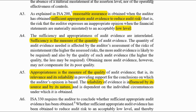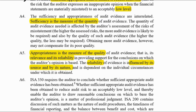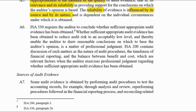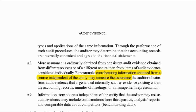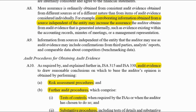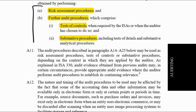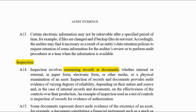A14 to A24 says we need to have sufficient and appropriate audit evidence to reduce audit risk. Sufficiency is a measure of quantity — do I have enough? Appropriateness is a measure of reliability and relevance. A8 states that corroborating from an independent source is going to give you a higher level of assurance. The types of procedures we do are risk assessments, further audit procedures, test of controls, and substantive.